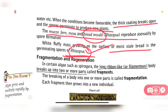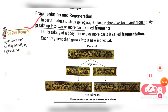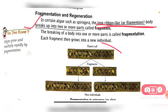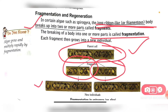The next type of asexual reproduction is fragmentation and regeneration. Some algae like Spirogyra have a long ribbon-shaped body. The breaking of a body into one or more parts is called fragmentation. Each fragment then grows into a new individual of the parent type.